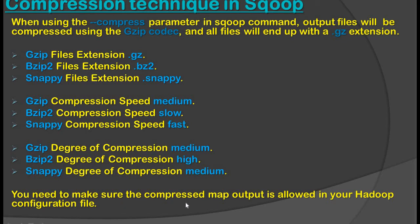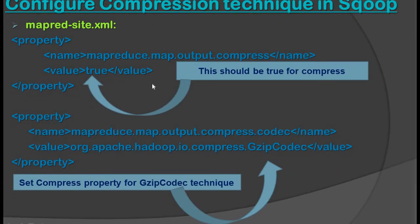You need to make sure that compressed map output is allowed in your Hadoop configuration file. Before using any compression technique, we need to make sure that the required settings are already set in the mapred-site.xml file. By default these settings are already set, but we need to double check. If the compression technique is not set in the Hadoop configuration file, Sqoop will not be able to compress data using that technique.